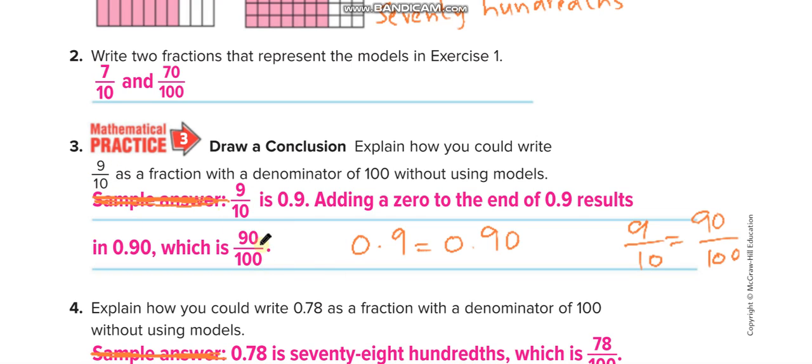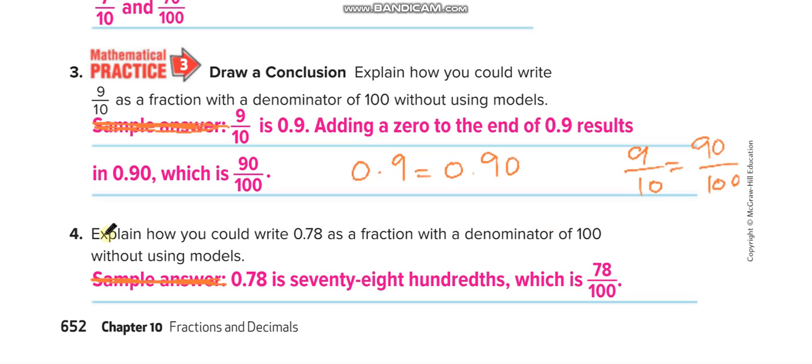They both are equal: 9 over 10 or 90 over 100, and even their decimals, 0.9 and 0.90. Explain how you could write 0.78, so it will be 78 over 100.